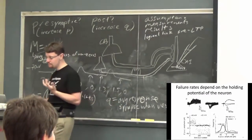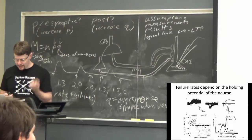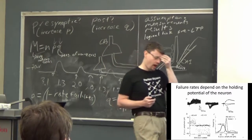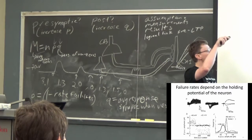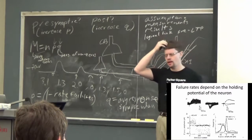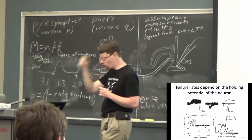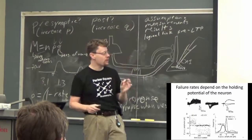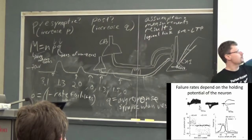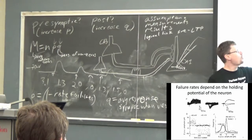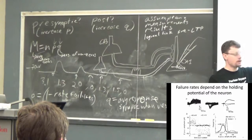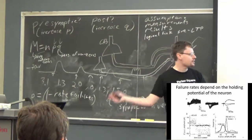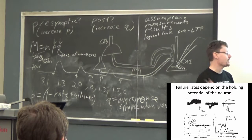One of the key experimental observations for what we're going to talk about on Monday: Roberto Malinow and Liao in his lab were recording from a CA1 neuron while stimulating presynaptic axons. They noticed that if their postsynaptic cell was at plus 60 millivolts, they almost always saw some kind of response. But if they took that same postsynaptic cell one second later — not even enough time for LTP to occur — and went back to minus 70 millivolts, something very different happened. That's what we'll pick up on Monday.